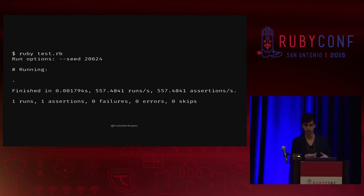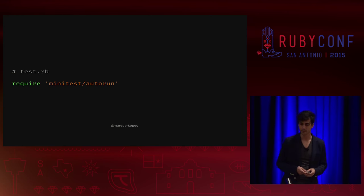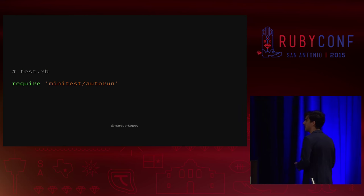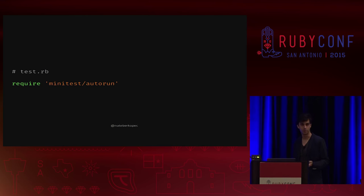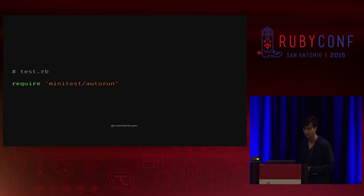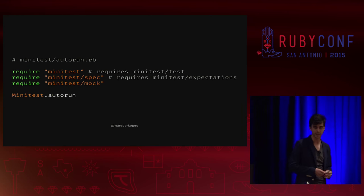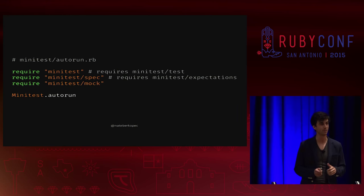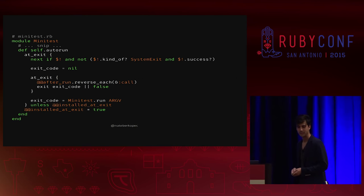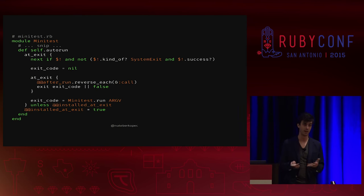If we run that file just with Ruby, we get all this output and we don't know how that output shows up. So let's start from the beginning — requiring minitest/autorun. My guess would be to look in the Minitest library for an autorun.rb file in lib/minitest/autorun, which is exactly what I find. Slightly simplified, this is what that file looks like. It just requires some other files and calls Minitest.autorun. Minitest.autorun lives in minitest.rb — what we'd expect if we were looking for a class method on Minitest.